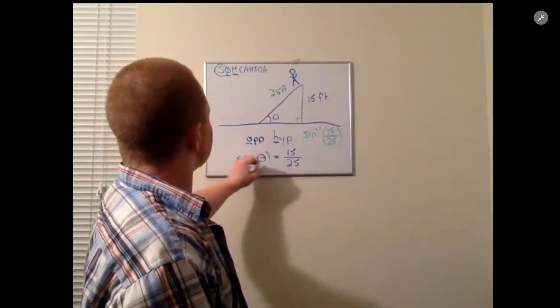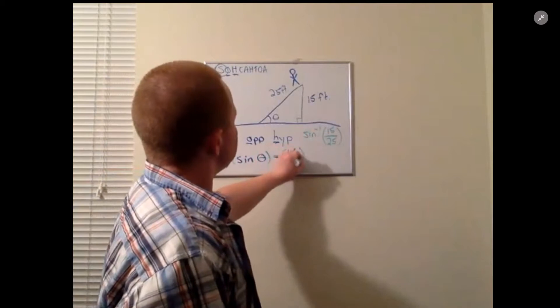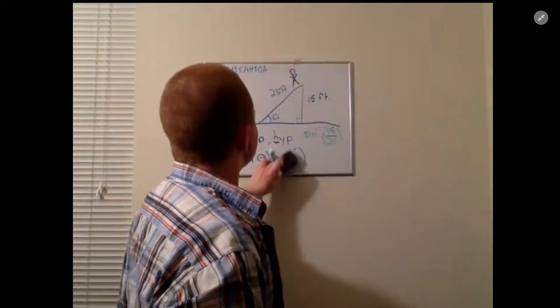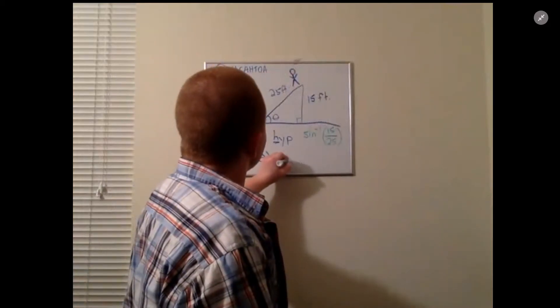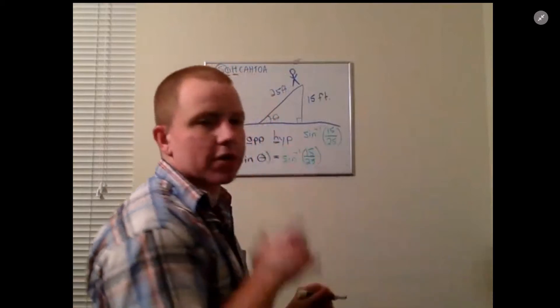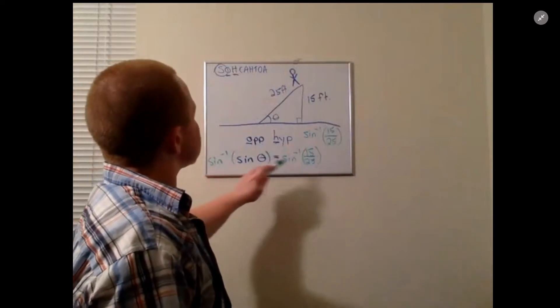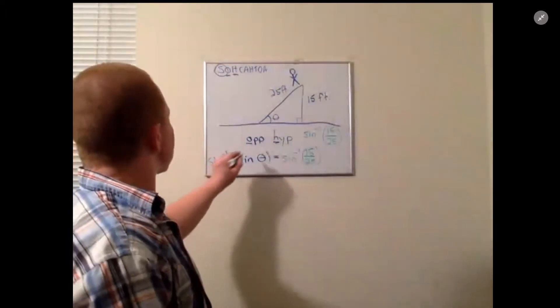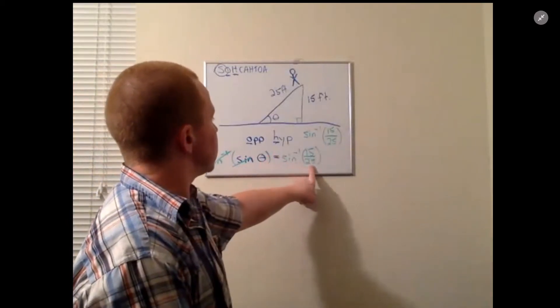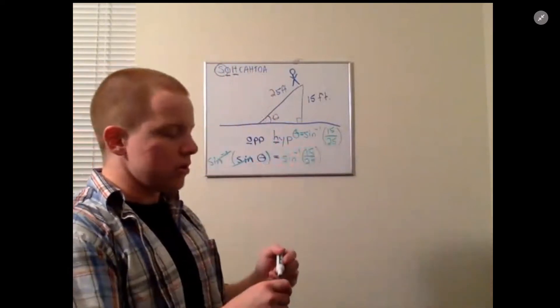So you take the inverse sine of this side and of this side. You're taking the inverse sine of this and then you write it before this fraction. So it'd be the inverse sine of 15 over 25. You don't have to simplify the fraction because we're going to type it in the calculator anyway. We're taking the inverse sine of both sides, so those cross out and that's why we have theta by itself. Theta equals this.